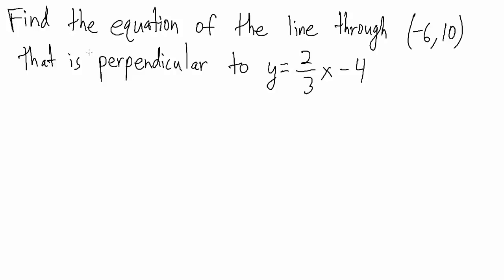In this video we're going to find the equation of the line that goes through a given point, and this line is also perpendicular to y equals two-thirds x minus four.